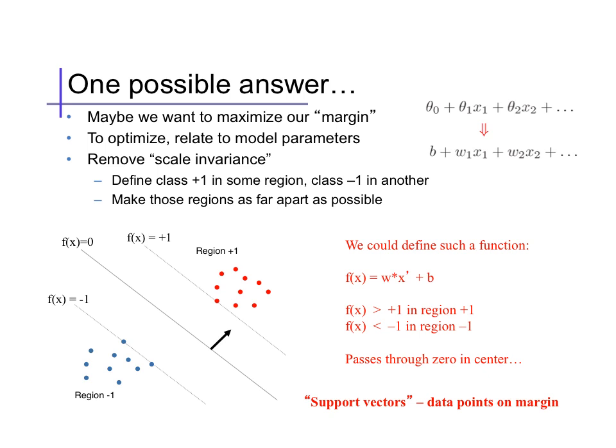We'll define that not only are the positive class a region with positive response, they're in a region with positive response at least plus 1. Similarly, the negative data are in a region with response at most minus 1. Since these are isosurfaces of a linear response, they're also hyperplanes, just like and parallel to the decision boundary.